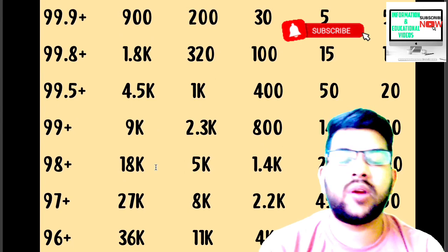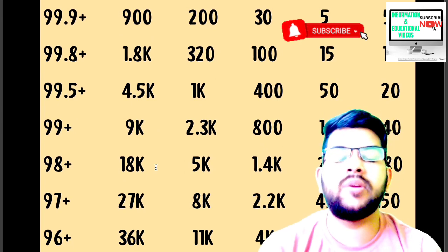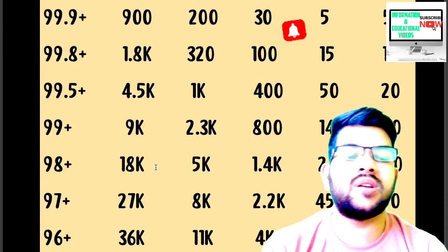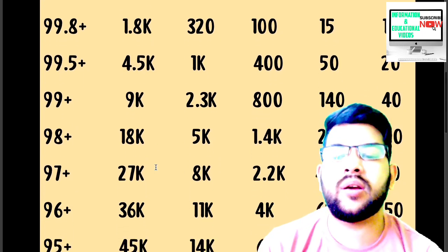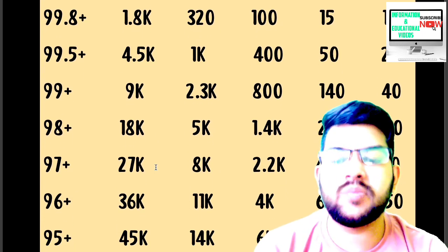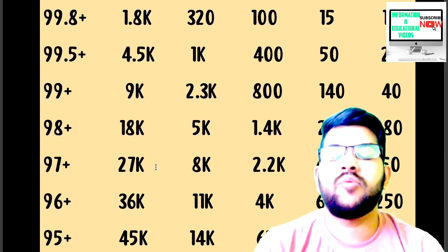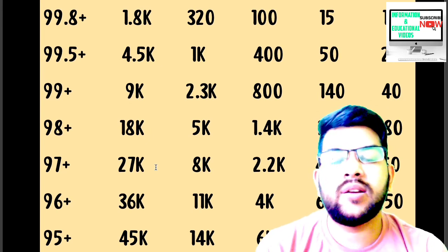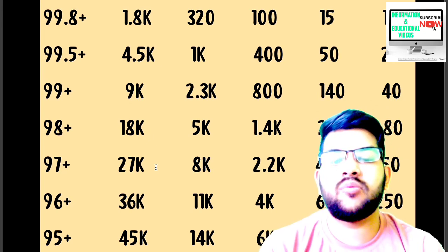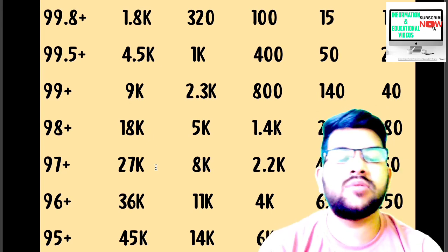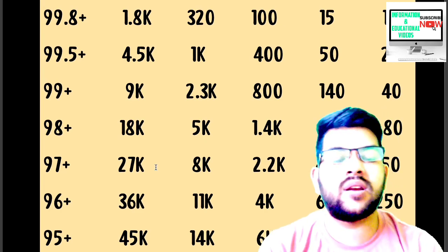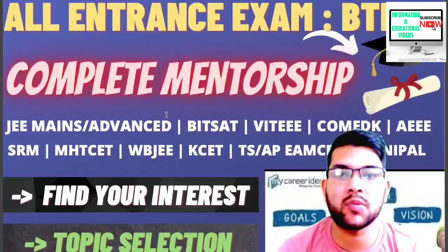For 96 plus percentile: CRL rank around 36,000, OBC 11,000, EWS under 4,000, SC under 650, ST under 250. For 95 plus percentile: CRL 45,000 or less, OBC under 14,000, EWS under 6,000, SC under 900, ST under 400.